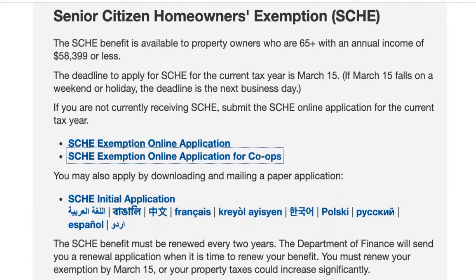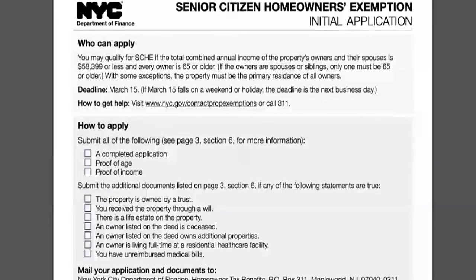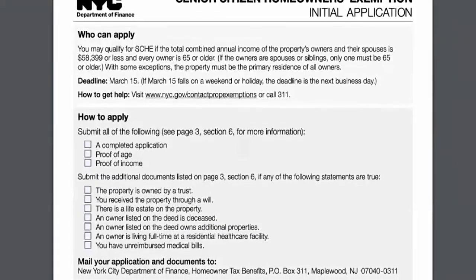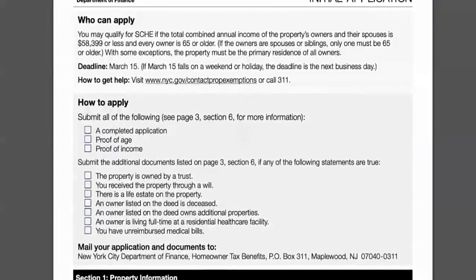If the applicant doesn't have a computer or prefers not to apply online, they can download and mail in a paper application. The paper application reminds you who can apply for the benefit, the deadline for eligibility, how to get help from the Department of Finance, what documentation should be submitted, and additional documents required depending on the circumstances of the property. Mail the paper application to the New York City Department of Finance Homeowners Tax Benefits, P.O. Box 311, Maplewood, New Jersey.